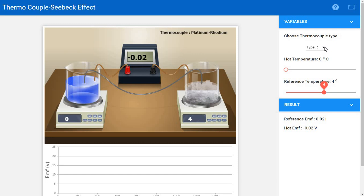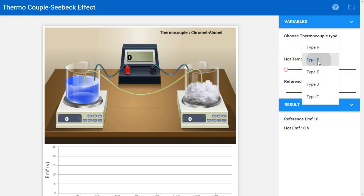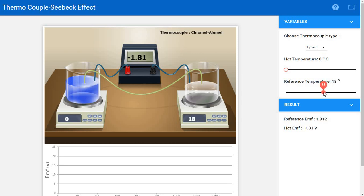In this simulator, we can choose as many as thermocouples: R-type, K-type, E-type, J-type, T-type. We are going to choose K-type thermocouple. We can see that the hot temperature is 0, the reference temperature is 0. Let's change it to 20 degrees or something. Yeah, 18 degrees is enough.